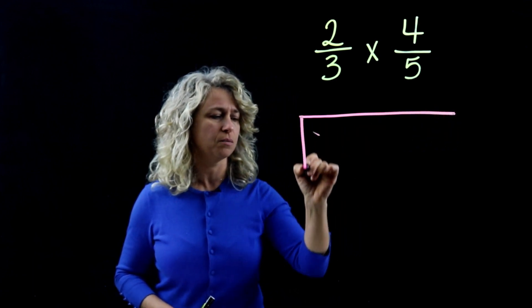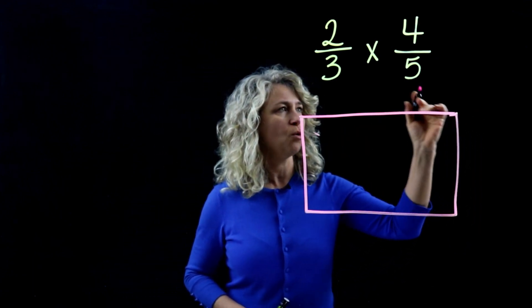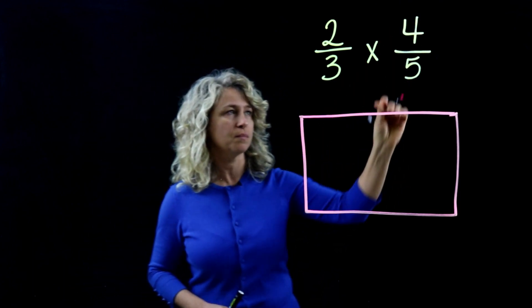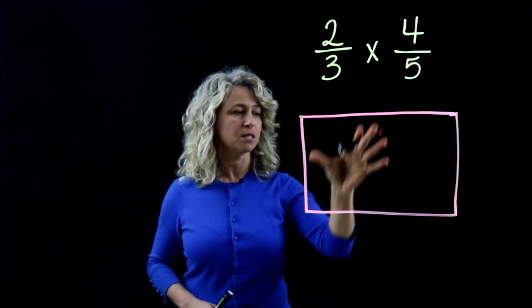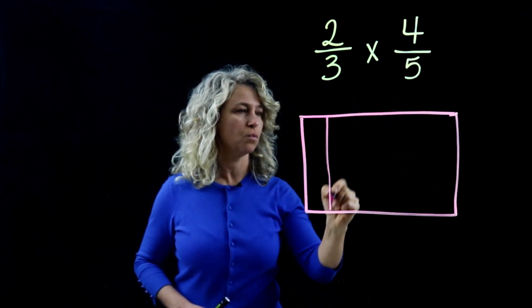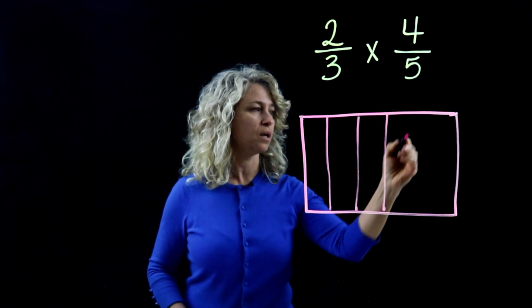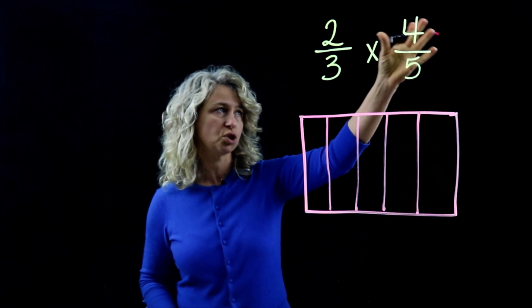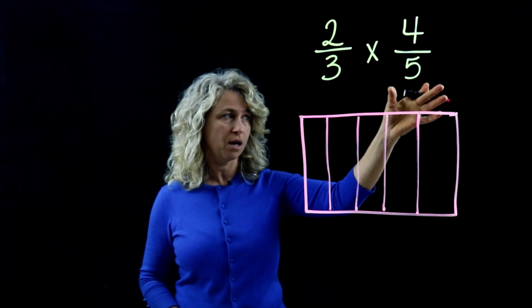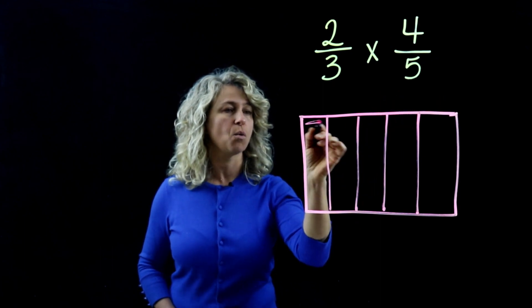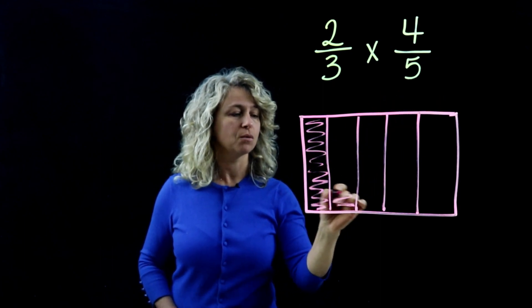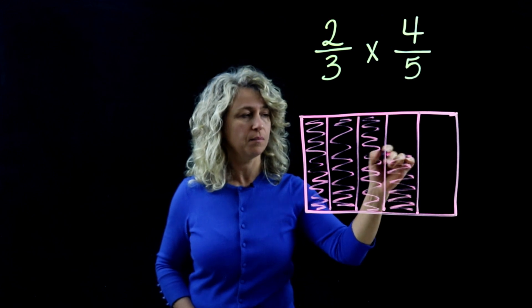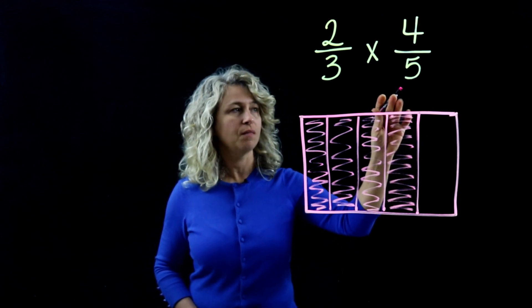I'm going to draw a rectangle and model the second number first — four-fifths. I'll divide this box into fifths: one, two, three, four, five equal sections. Then I want to show four of the fifths shaded in, so I'm going to lightly shade four-fifths.